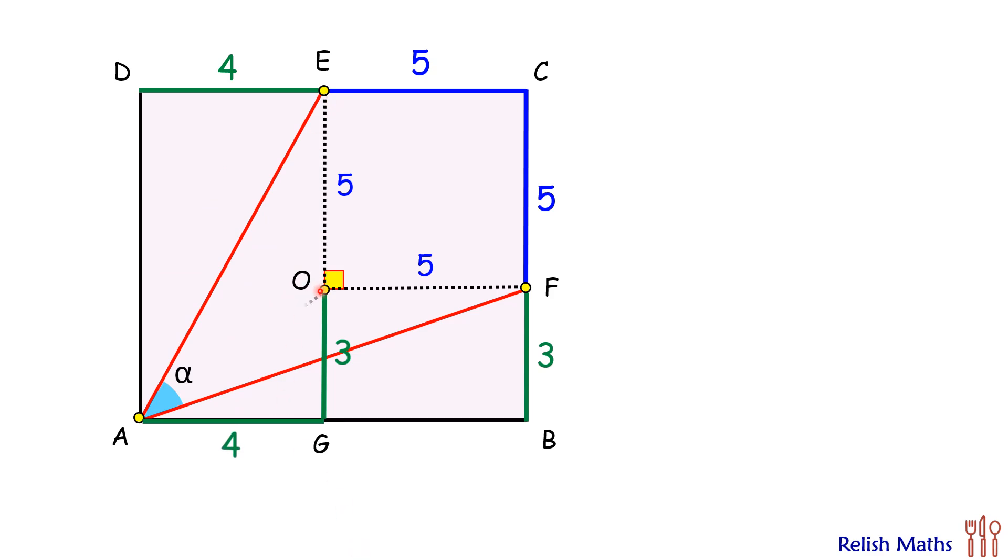Let's join OA. Now this is a right angle triangle getting formed. So OA length will be 5 cm.